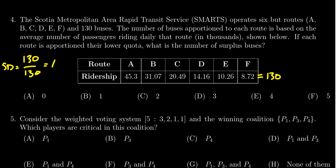Rounding down, since we're doing the lower quota, you're going to get 45, 31, 20, 14, 10, and 8. For which if you add those together, you're going to get 128.